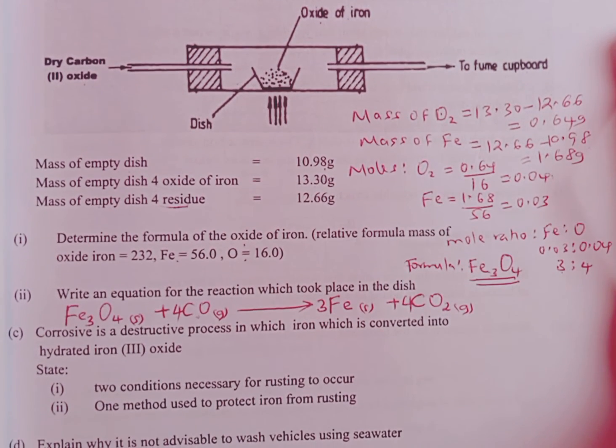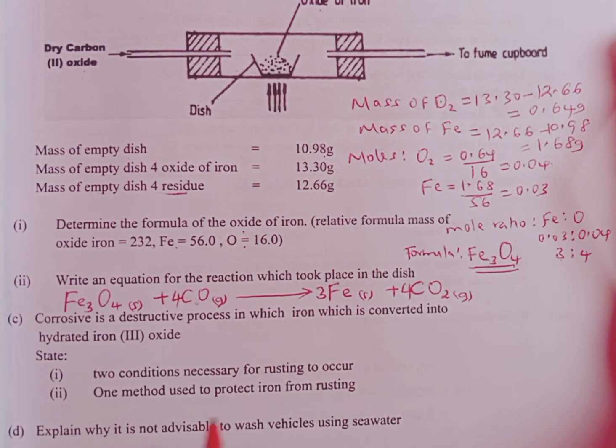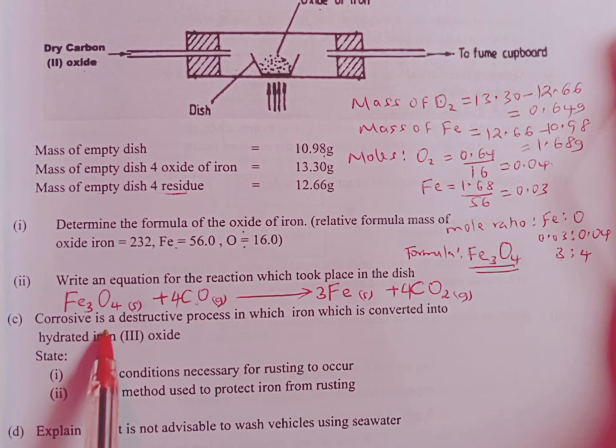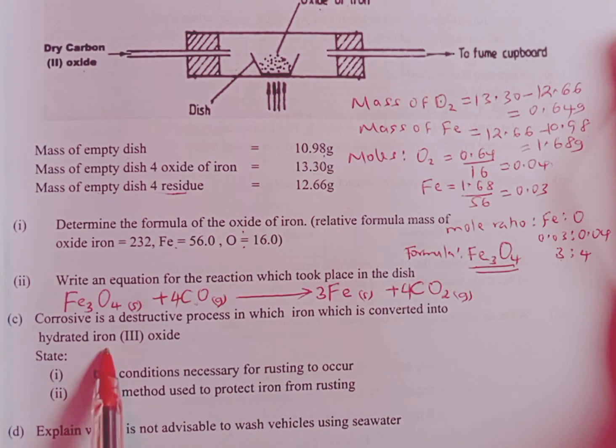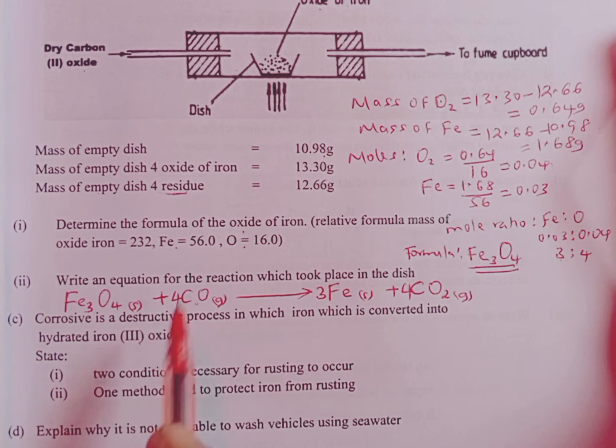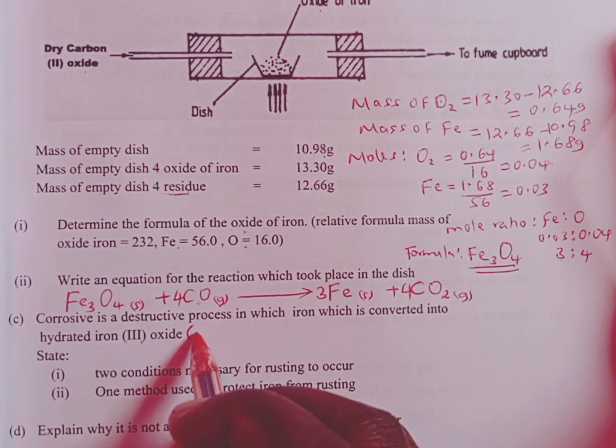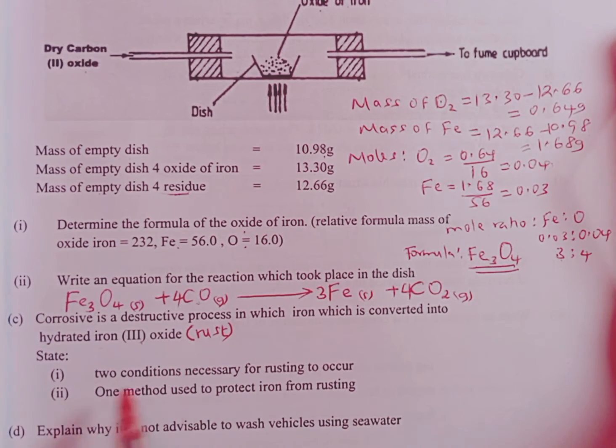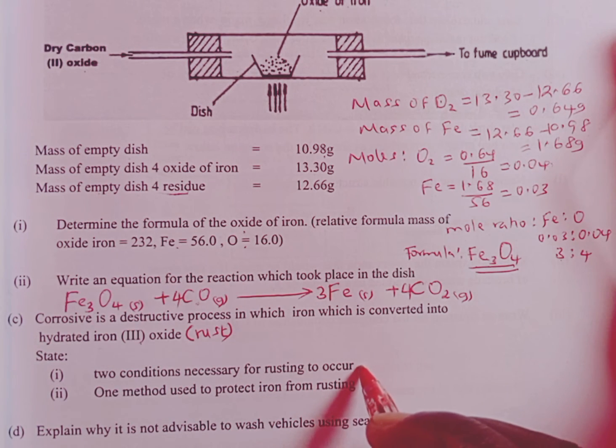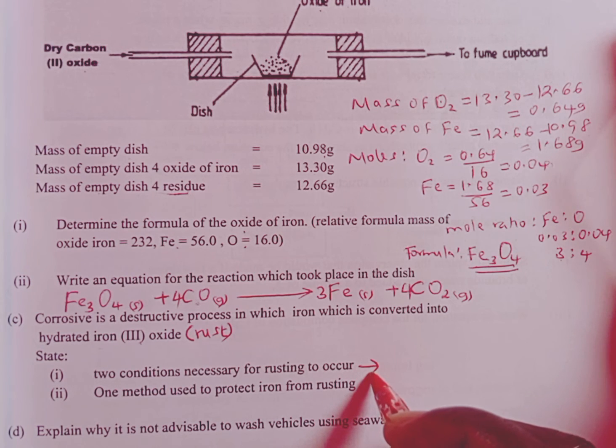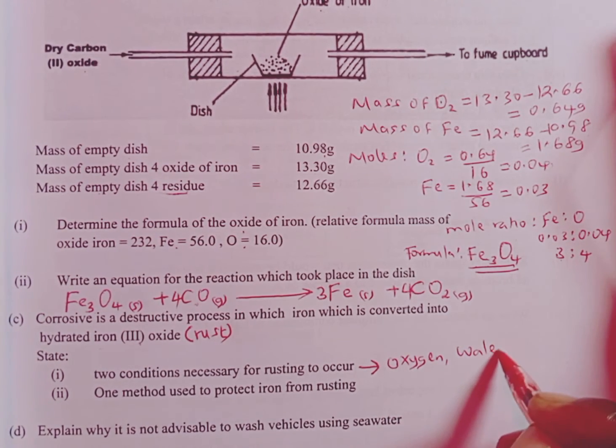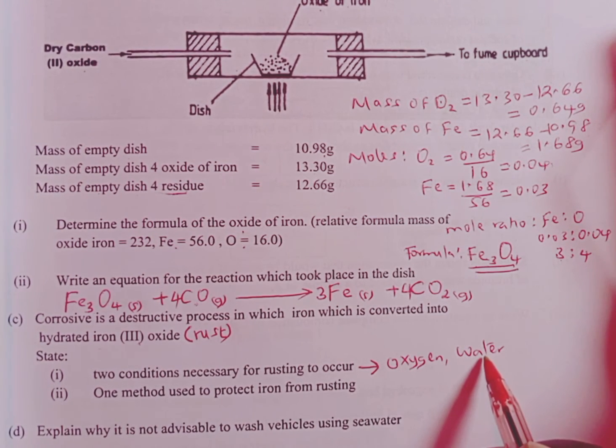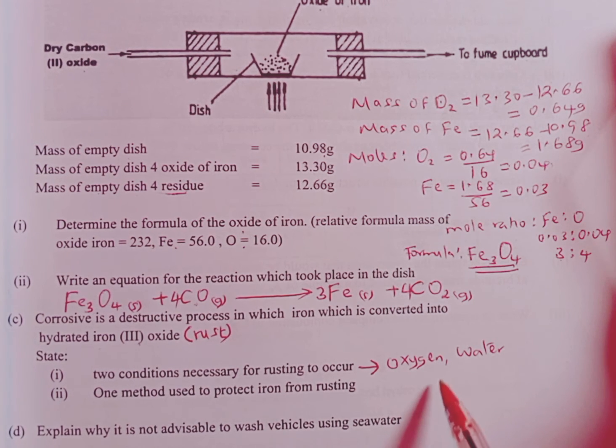We move down to part C of the question. Corrosion is a destructive process in which iron is converted into hydrated iron 3 oxide. Hydrated iron 3 oxide is the chemical name for rust. Roman one states two conditions necessary for rust to take place. For rust to take place, one, oxygen must be present. Then of course we need water. The reaction between the two on the metallic surface causes rust.